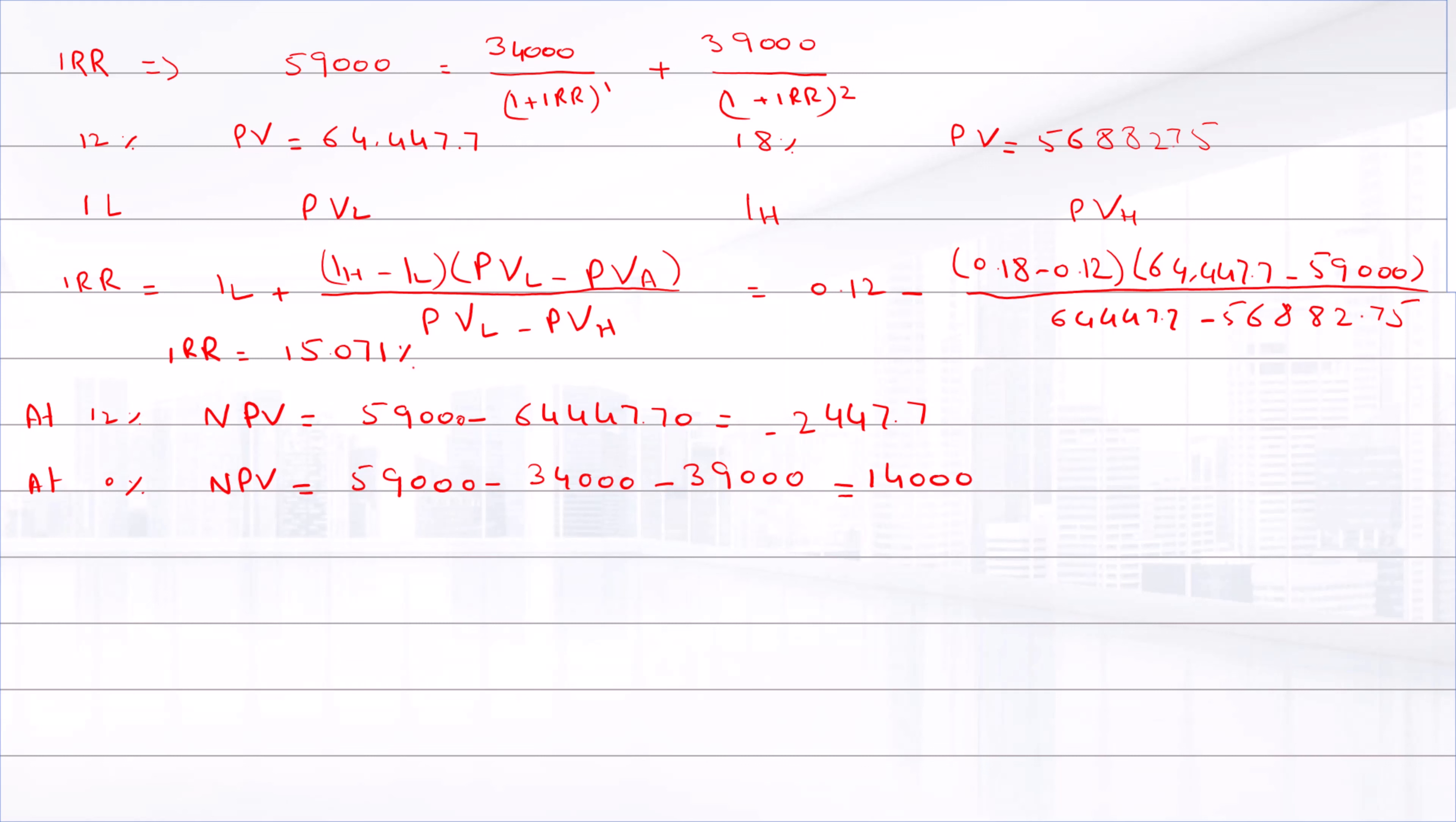At an interest rate of 24%, the NPV is 59,000 minus 52,783.56, that equals negative $6,278.56.